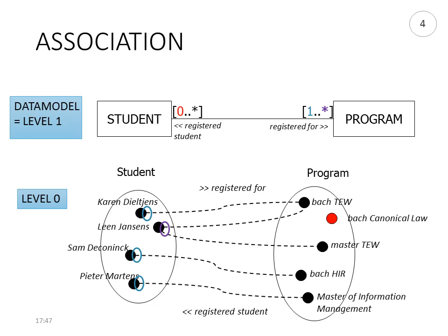In our example, a student can be registered for minimum 1, maximum many programs, and a program has 0 to many students registered for it. Looking at the example, the red 0 on the side of students indicates that we can have programs with 0 students. The Bachelor in canonical law is an example of a program that has 0 registered students.